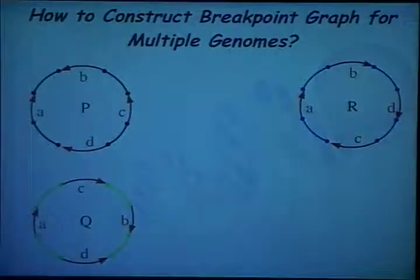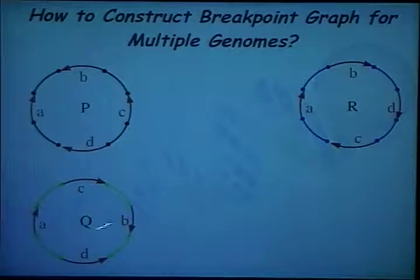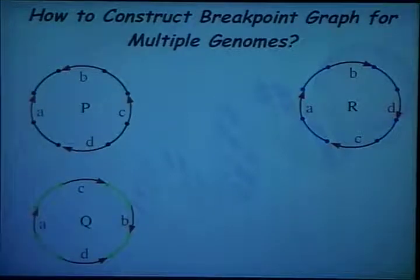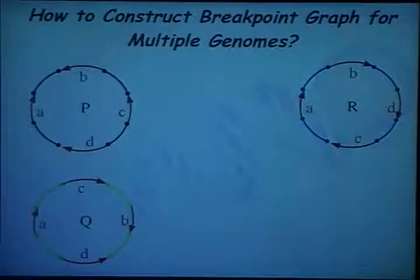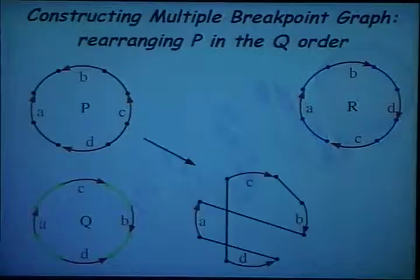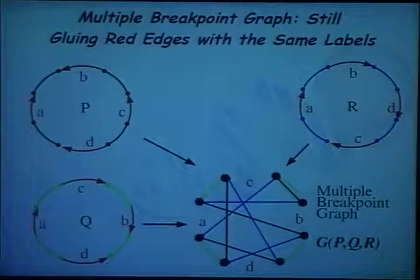The first question is how to generalize the breakpoint graph for multiple genomes. With three genomes sharing the same blocks, the red edges are the same in all three genomes while adjacencies differ. Black edges encode adjacencies in the P-genome, green edges in the Q-genome, and blue edges in the R-genome. Bringing them all together, we construct what we call the multiple breakpoint graph of three genomes.